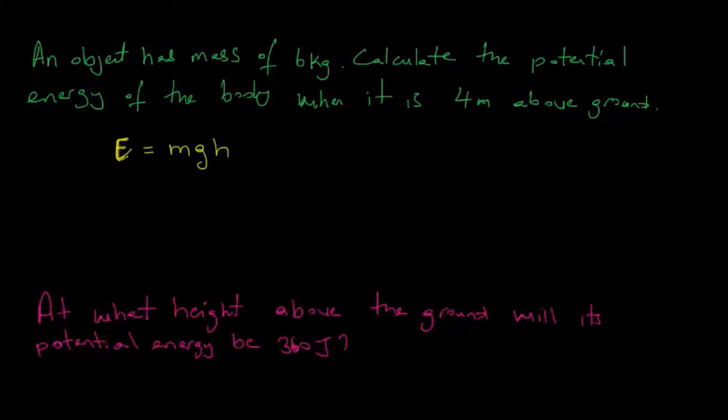So we're given the mass m is 6 kilograms, the height is 4 meters, and gravity we know to be 10 newtons per kilogram. So we can plug these variables into our equation and solve for the energy.